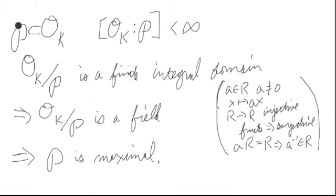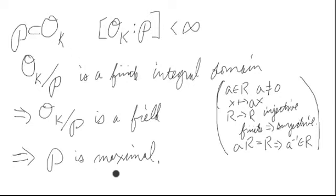First, we take a prime ideal in OK. We know that its index in OK is finite. In particular, since P is prime, if you mod out by P you get an integral domain. Finite integral domains are fields, which means that P is maximal. So the collection of maximal ideals is exactly equal to the collection of prime ideals here.